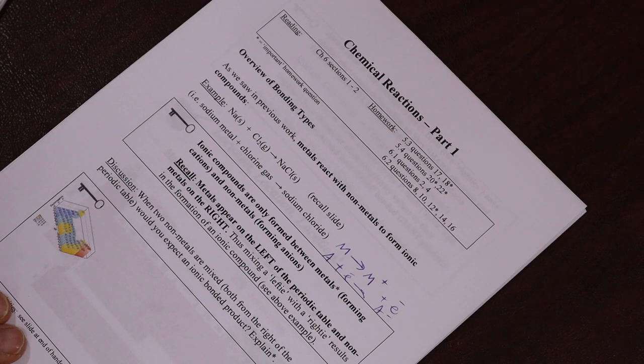If you remember the periodic table, anything on the left, and if you remember that diagonal line, and we'll show you a periodic table in a second, anything on the left is classified as a metal. So for example, iron would make a plus ion, lose electrons, and a non-metal on the right would gain an electron.